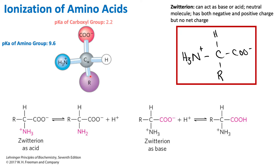Remember that the R group will be different for the different amino acids. The carboxyl group is able to pick up or donate a hydrogen, therefore it is ionizable and will have a pKa value. The pKa just refers to the ability to dissociate or ionize. For the carboxyl group, the pKa is 2.2, and for the amino group, the pKa is 9.6.